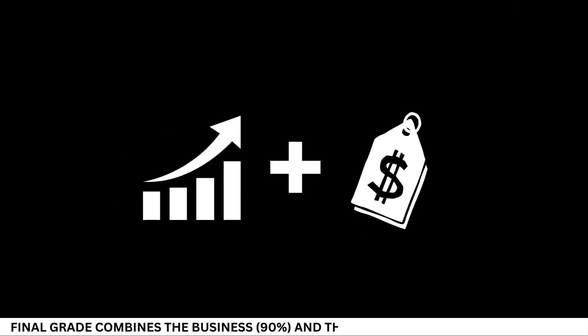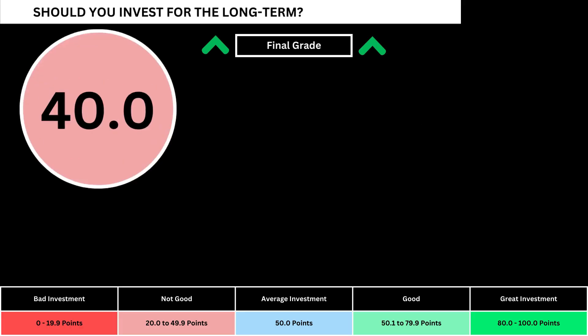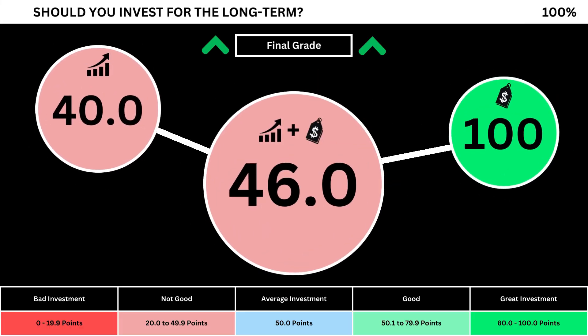Finally, we can put everything together to get the company's final grade. Adding the business grade and the fair price grade, we can see the company's final grade. Anything less than 50 means it's not a good long-term investment. A final grade above 50 means it would make a good long-term investment if you bought the stock right now.